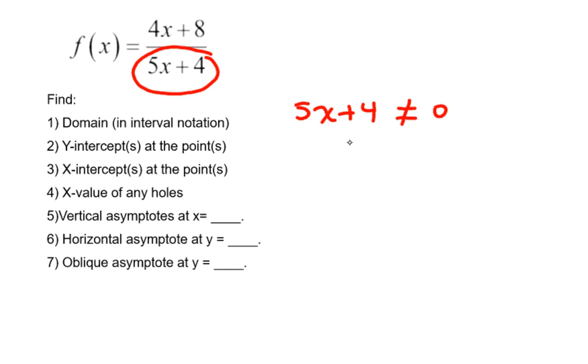We'll begin by subtracting 4 on each side, and then dividing by 5 on each side, and here is the one value of x that should not be allowed in the domain.